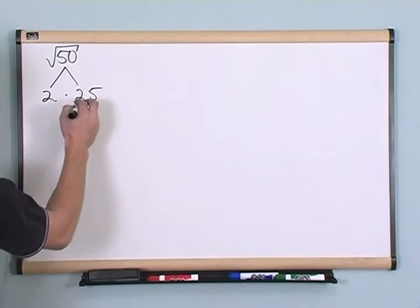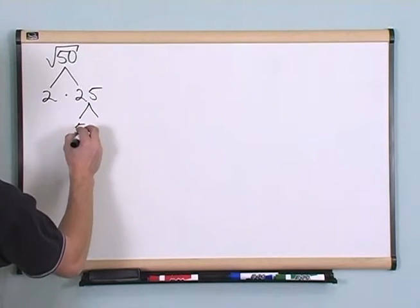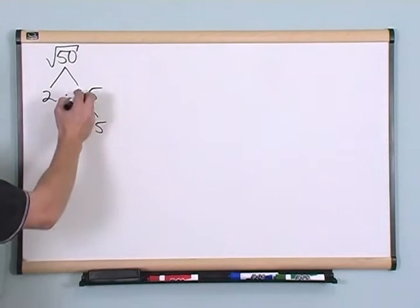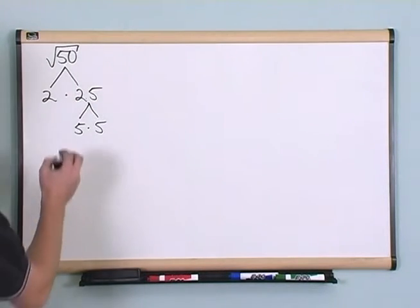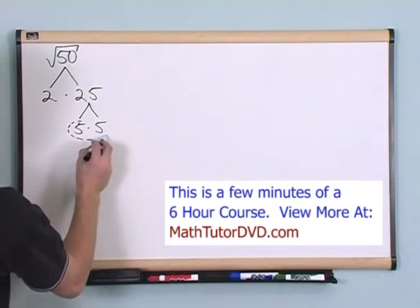Can't do anything more with the 2, but I know that under 25, 5 times 5 will give me 25. Okay? And looky here, I found a pair.